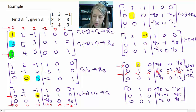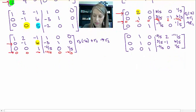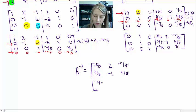And so my A inverse is negative 3 fifths, 2, negative 11 fifths, 3 fifths, negative 1, 6 fifths, negative 2 fifths, 0, and 1 fifths.